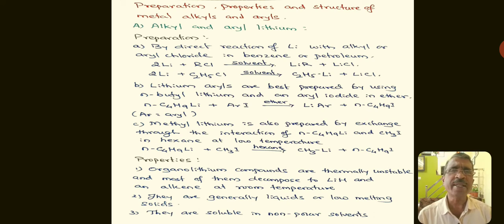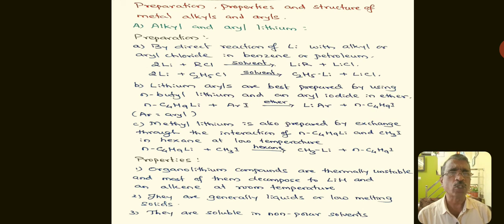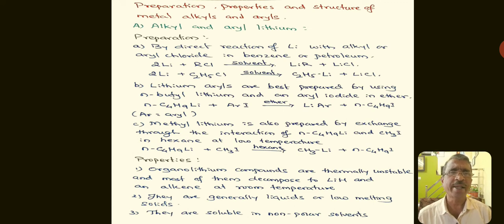Methyl lithium can also be prepared by exchange through the interaction of n-butyl lithium and methyl iodide in hexane at low temperature. When n-butyl lithium is treated with methyl iodide, we get methyl lithium and n-butyl iodide.